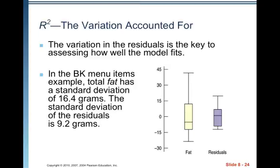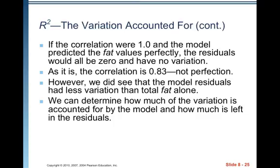If the correlation were 1.0 and the model predicted the fat values perfectly, the residuals would all be zero and have no variation because we'd have a perfect line. As it is, the correlation is 0.83, not 1.0. However, we did see that the model residuals had less variation than the total fat.